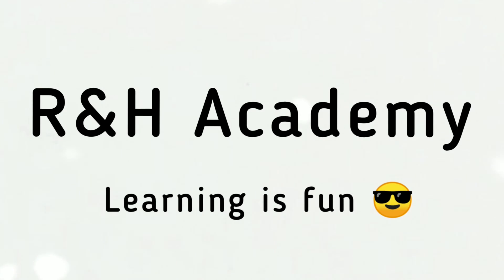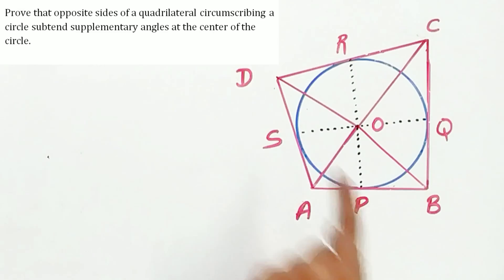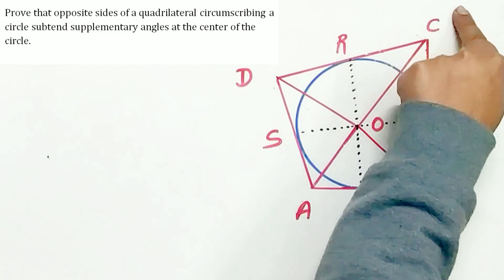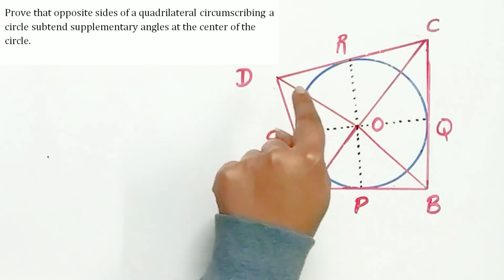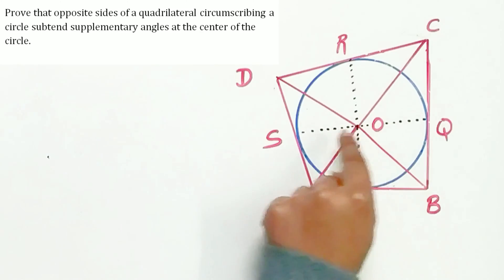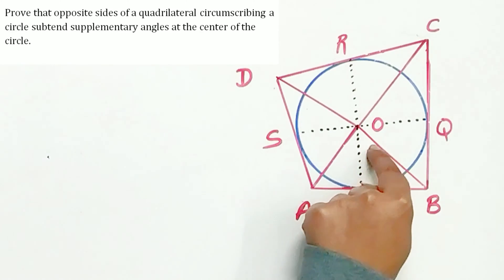Welcome to RNH Academy channel. Question 13 of exercise 10.2 says: Prove that the opposite sides of a quadrilateral circumscribing a circle subtend supplementary angles at the center of the circle.